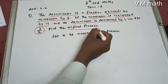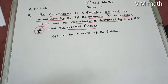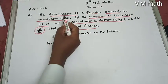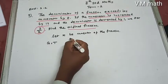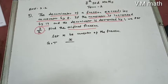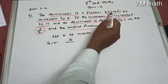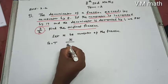Find the original fraction. Let x be the numerator of the fraction. First condition: the denominator exceeds its numerator by 8, so the denominator is x plus 8.